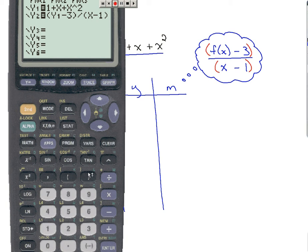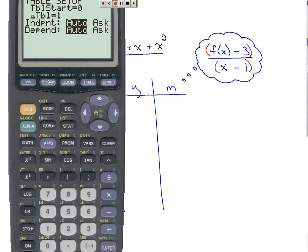Alright, we're almost ready now to input some values and complete this table. The next thing we have to check. Hit second window, because that's the table setup. If we're going to complete this table and use our calculator, we need to make sure that the independent variable is on ask. So I go over to ask, highlight that, hit enter. That was second window for the table setup. Independent variable has to be on ask. Now we're going to go to the table. So second graph.